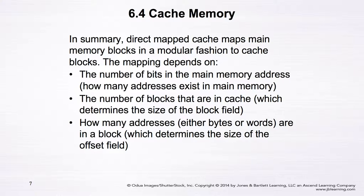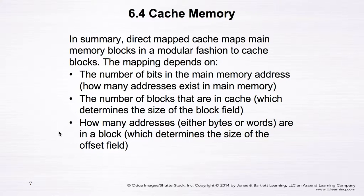In summary, direct mapping maps main memory blocks to cache blocks in a modular fashion. The mapping depends on three parameters: the number of bits in the memory address (how many addresses exist in main memory), the number of blocks in the cache (which determines the block field size), and how many addresses per block — either bytes or words — (which determines the offset field size). These three parameters correspond to the three fields in the direct map cache mapping.